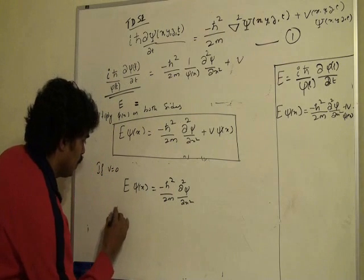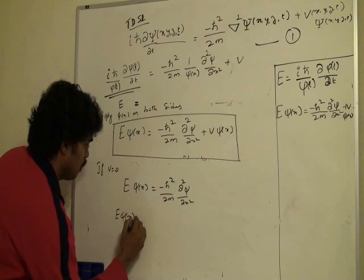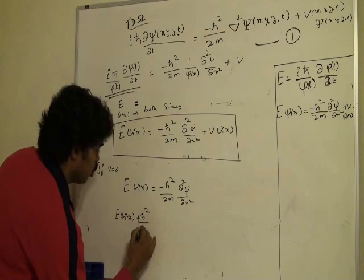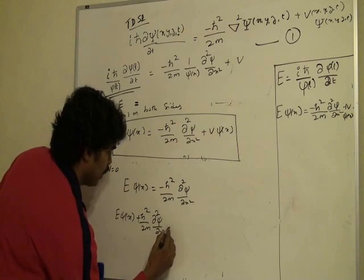this becomes E ψ(x) plus h bar squared by 2m d²ψ/dx² equal to 0.